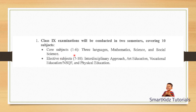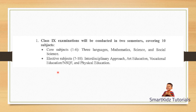The core subjects are referred to as subjects 1 to 6. These are your usual subjects — three languages which could be English, Hindi, and maybe Konkani, Marathi, French, or Portuguese, whichever third language you have. Then you have Maths, Science, and Social Science which includes History and Geography. That is 6 core subjects. Subjects 7 to 10 are the elective subjects — Interdisciplinary Approach (IDA), Art Education, Vocational Education or NSQF, and Physical Education.